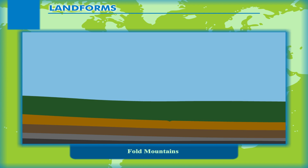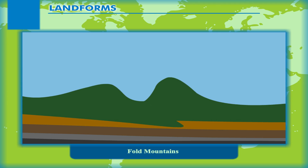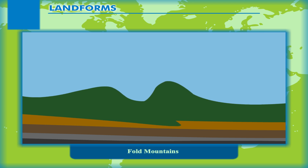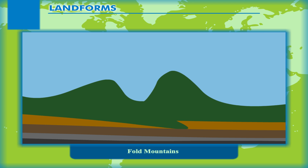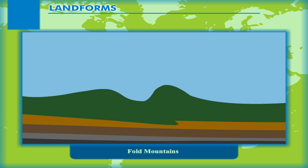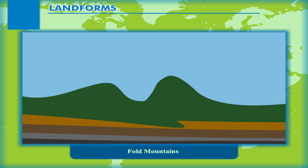Fold Mountains. Tectonic plates are huge rocky slabs of earth's lithosphere — its crust and upper mantle. Tectonic plates are constantly in motion, shifting against each other in fault zones, falling beneath one another in a process called subduction, crashing against one another at convergent plate boundaries, and tearing apart from each other at divergent plate boundaries.